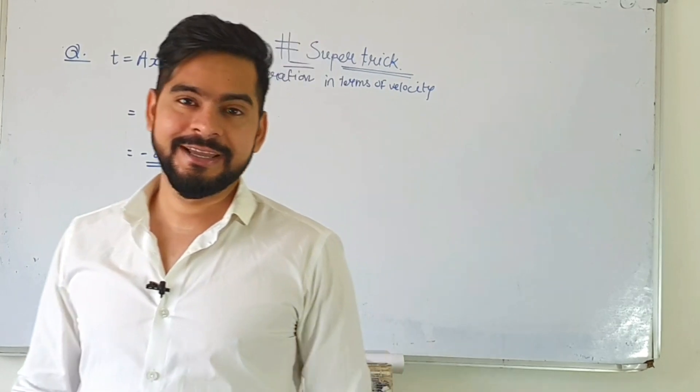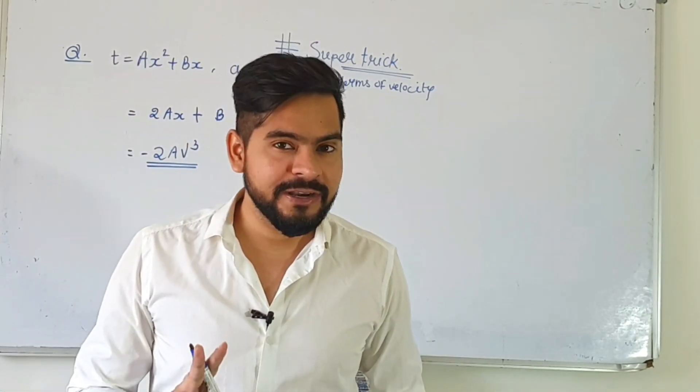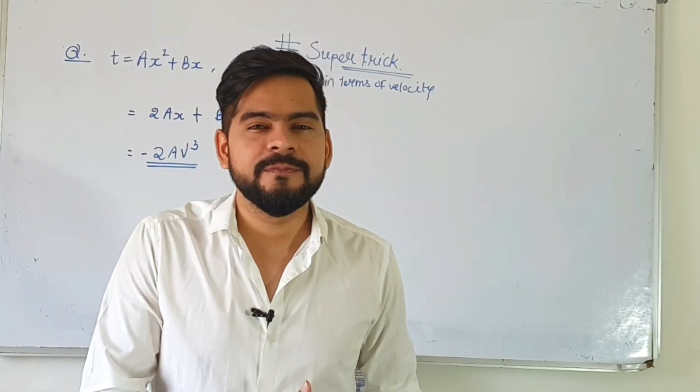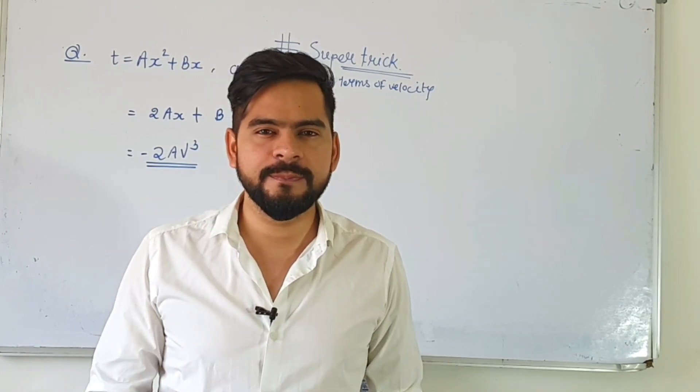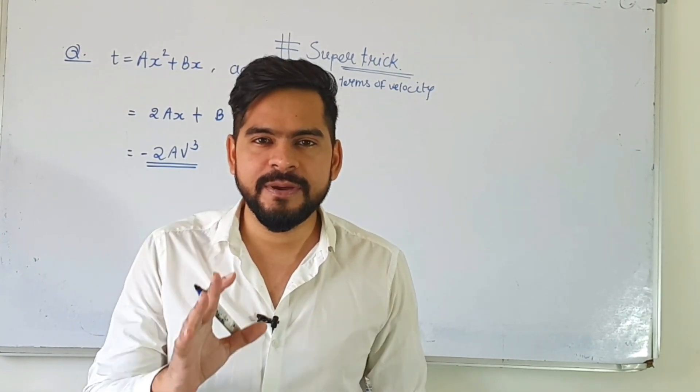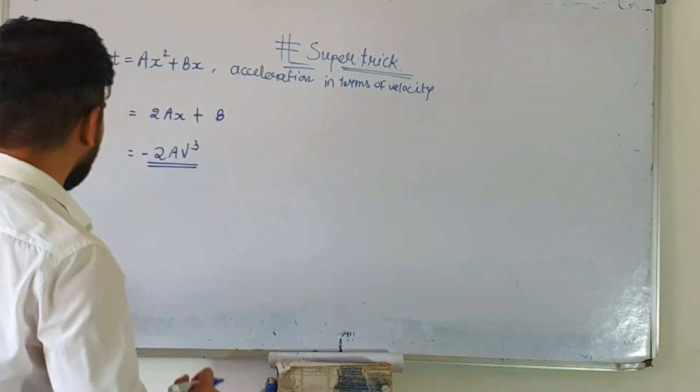This is the super trick. What to do? Differentiate two times, then multiply by minus v cube. That's it. Now I'll show you one more example so it becomes clearer.